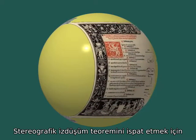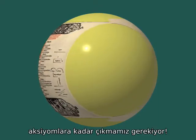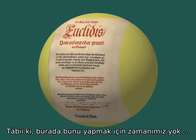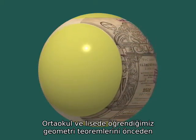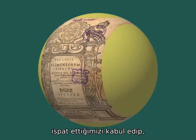In order to prove the theorem about the stereographic projection of circles, we should, in principle, start with the axioms. Of course, we have no time for that now. We will assume that we already know the theorems of geometry which are studied, say, in secondary school, and we will prove this theorem.